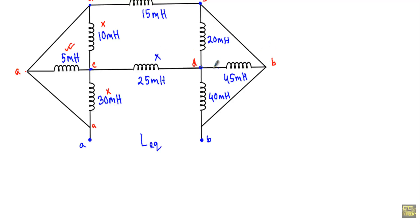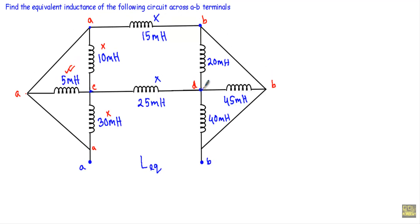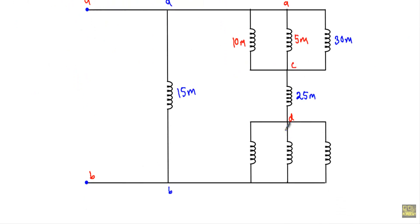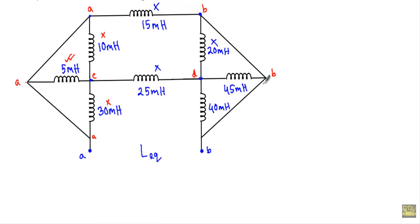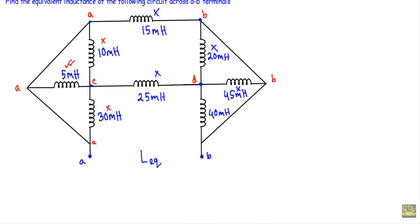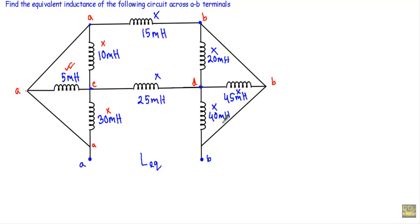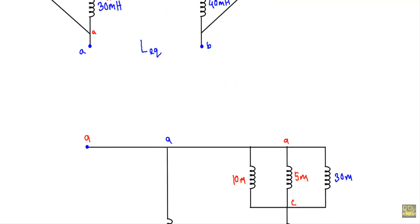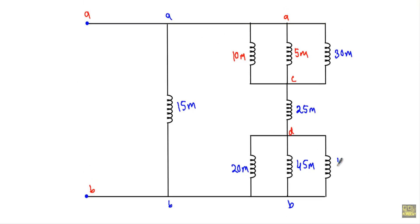Now I am left with only point B and point D. Going from point D to B, I will first encounter this 20 mH inductor. Then going from D to B, I will see this 45 mH inductor. And going from D to B, I will also get this 40 mH inductor. I have now covered all the inductors in the circuit.